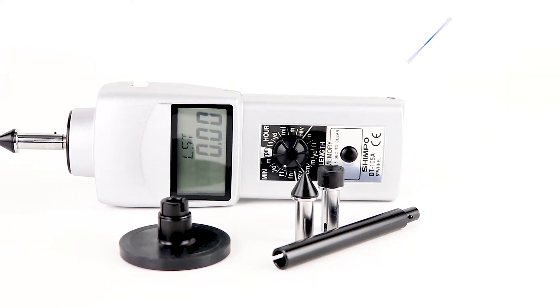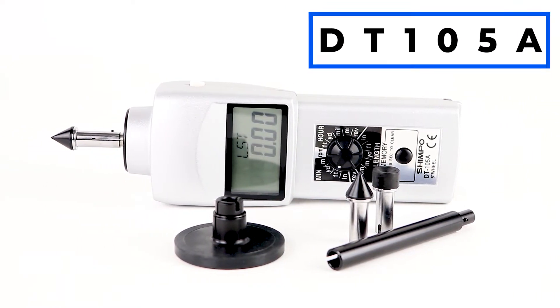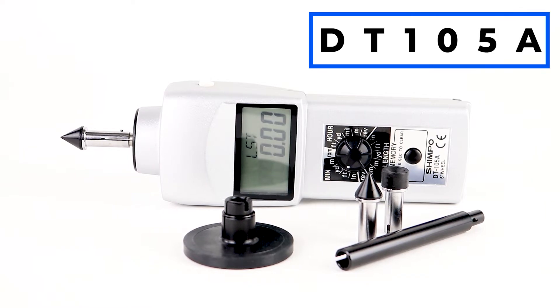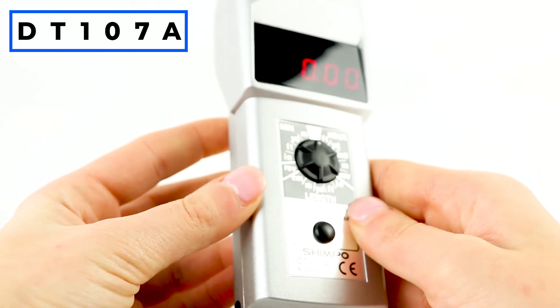Due to the lower power consumption of the LCD screen, the 105A model is rated for 65 hours of operation per pair of batteries, while the LED display on the 107A model is rated for 40 hours of operation.